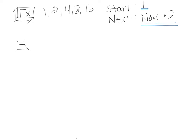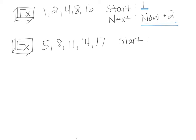Just until you get the hang of it. The sequence is 5, 8, 11, 14, 17. Your start is going to be 5, because that's what you're starting with. Then your NEXT — this one's pretty easy. Your NEXT is going to be your NOW, and this is increasing not by a multiple but by adding — it's increasing by 3 every time. So it's just NOW plus 3.